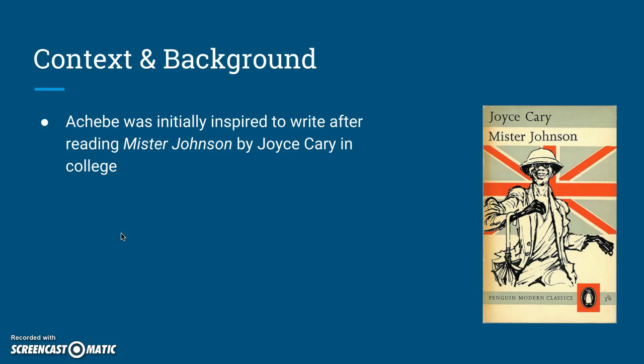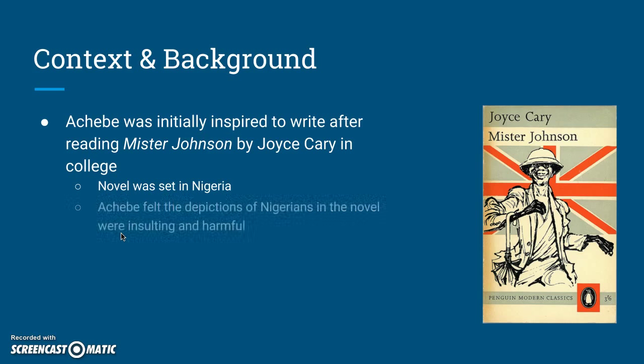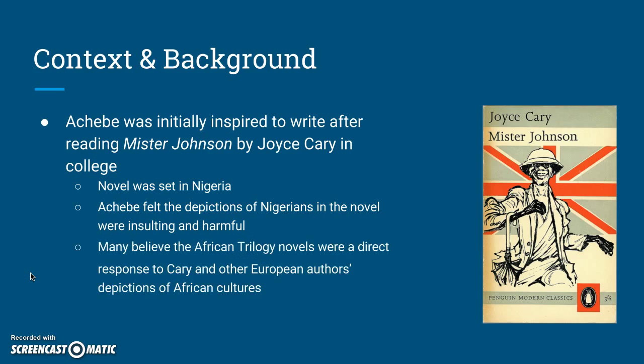Achebe was initially inspired to write after reading Mr. Johnson by Joyce Cary while he was studying at University College. This book is set in Nigeria and written by a British author, but Achebe felt that the depictions of Nigerians in the novel were very insulting and harmful — very stereotypical. You can see on the right side of the screen a cover used for the novel that has a stereotypical, racist depiction of an African man. Many believe the African Trilogy was a direct response to Cary and other European authors and their depictions of African cultures. Achebe wanted to create a fully formed view of what it meant to be African, especially during times of colonialism.